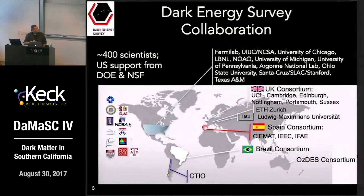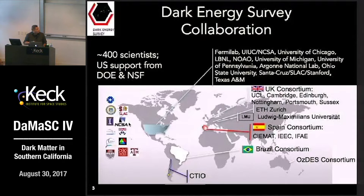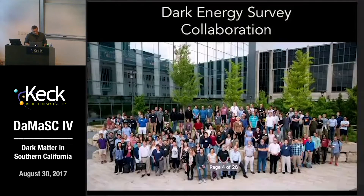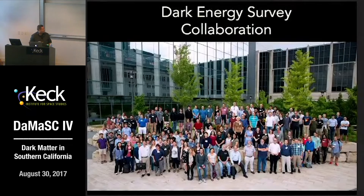Very quickly, the Dark Energy Survey collaboration has 400 scientists. US support comes mainly from DOE and NSF. We have international collaborators from Spain, Brazil, Chile, Australia, Germany, and the UK. But Fermilab is the lead institution in this effort. This is a picture of our recent collaboration meeting — it's not exactly 400 members, as some sit at home and lots of them are already exhausted from the analysis.